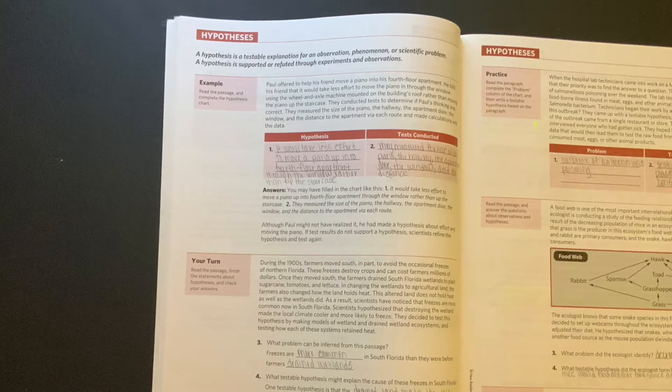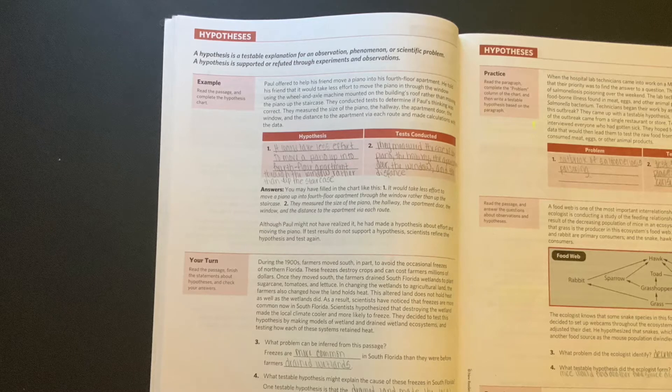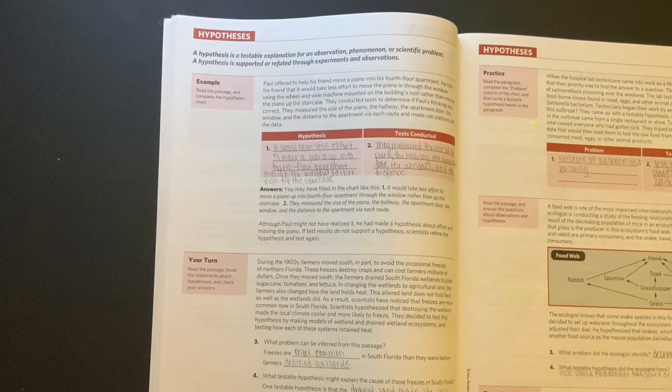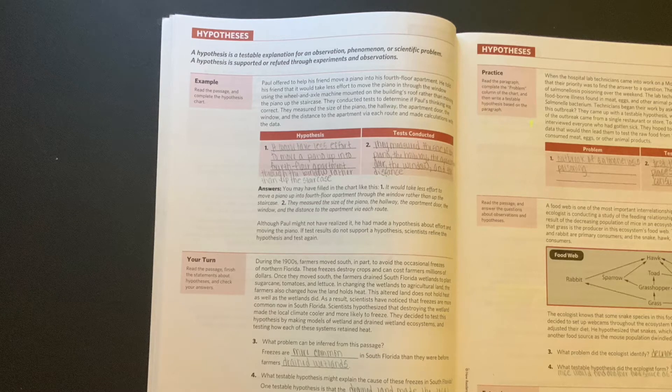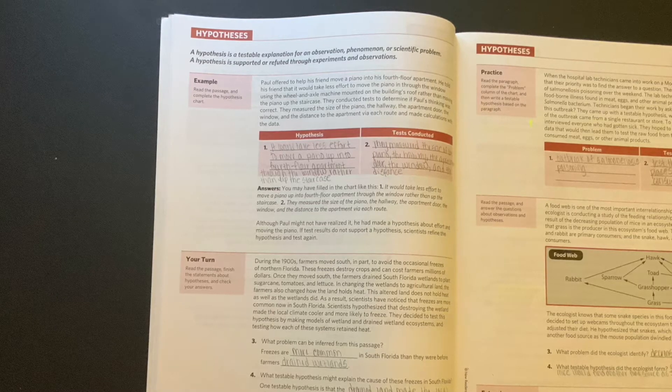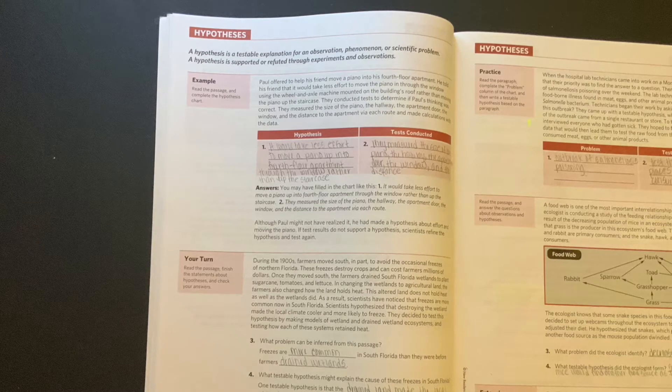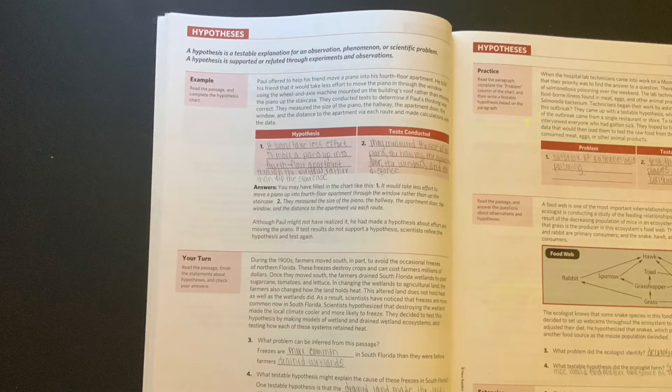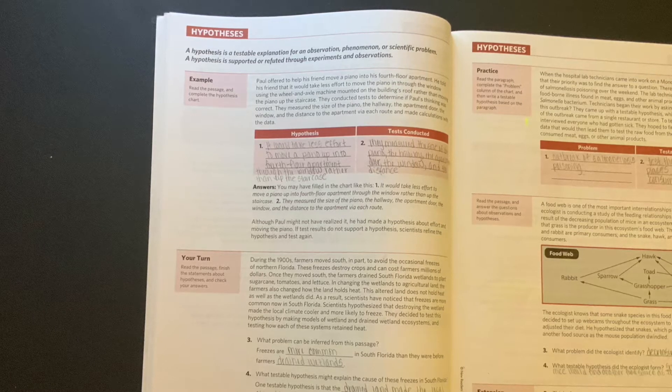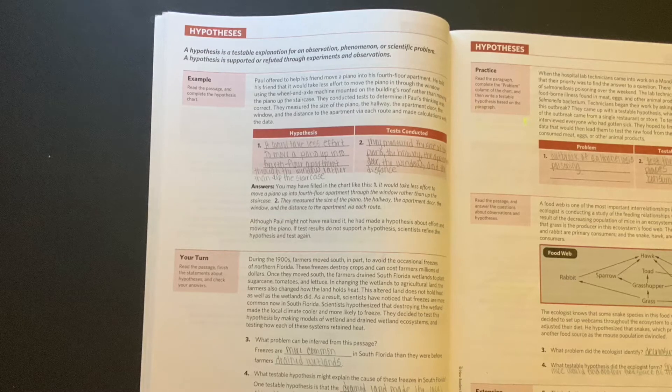Paul offered to help his friend move a piano into his fourth floor apartment. He told his friend that it would take less effort to move the piano in through the window using the wheel and axle machine mounted on the building's roof, rather than moving the piano up the staircase. They conducted tests to determine if Paul's thinking was correct. They measured the size of the piano, the hallway, the apartment door, the window, and the distance to the apartment via each route and made calculations with the data.